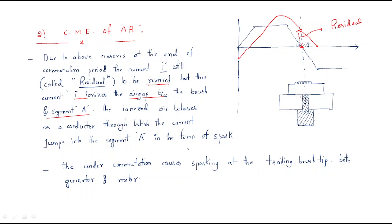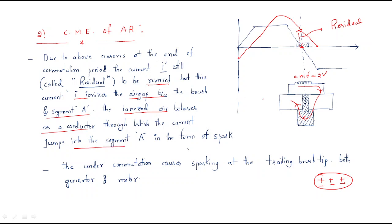Because of the residual current, some EMF is generated and current flows through the gap. Ionization occurs in the air gap — ionization behaves as a conductor, forming plus-minus charge pairs. Through this ionized path, current jumps into segment A, causing current to flow in segment A in the form of a spark.